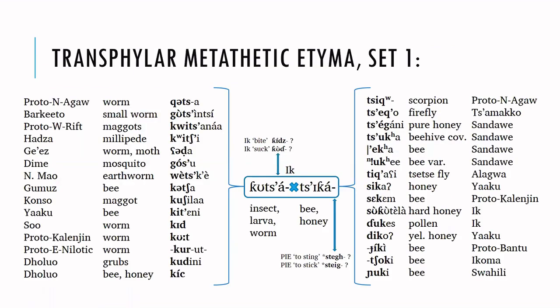Moving on — because time is of the essence — we're getting to the meat of the presentation. I probably have more data than we can get through, but that's not so important. The important thing is to get the overall pattern, and then I welcome your thoughts about it. I'm calling this trans-family metathetic etyma. What I mean by this is that in Eek I have a pair of words that look like they're inversions of each other, and their semantics are quite close.